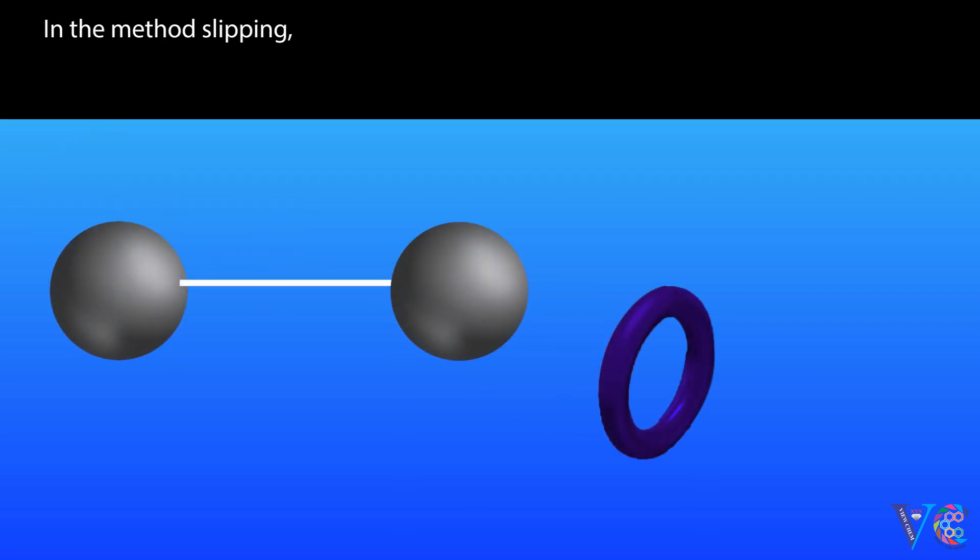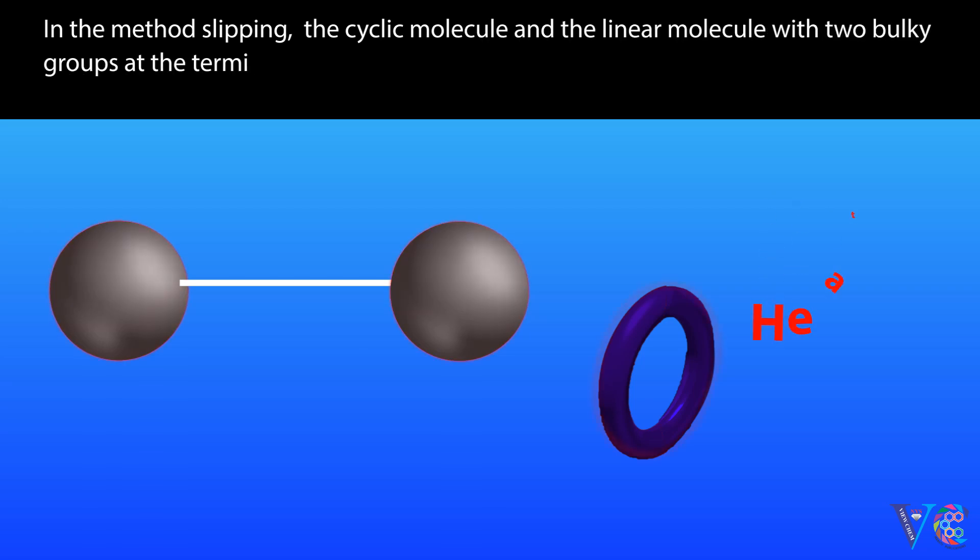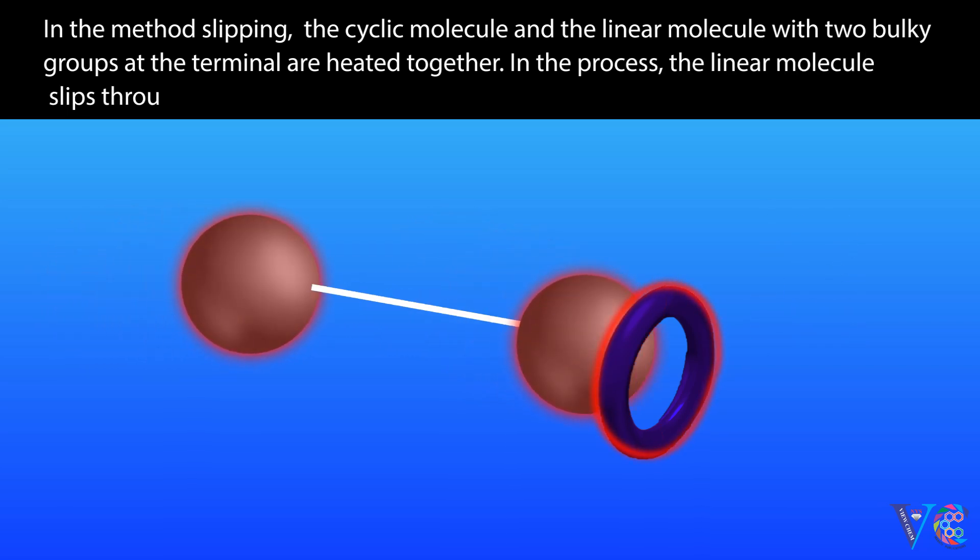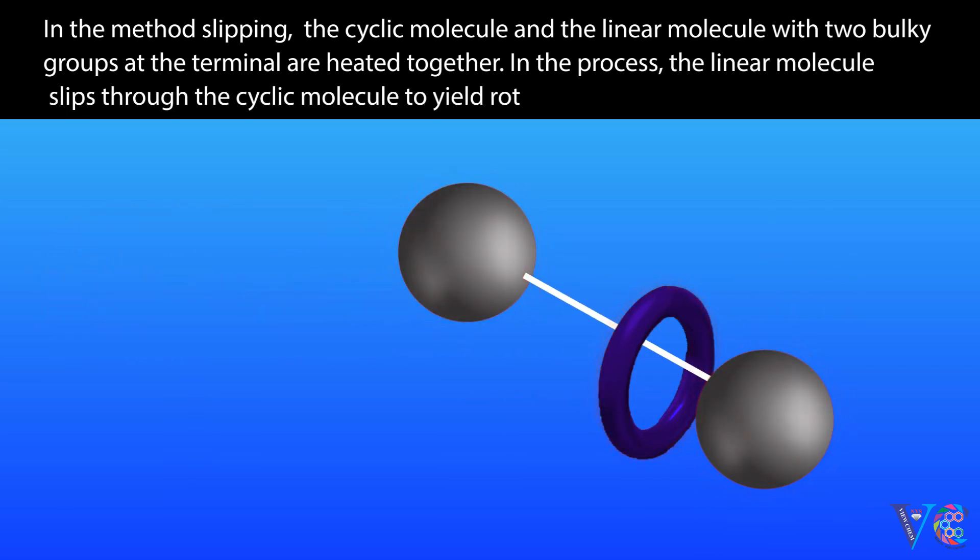In the method slipping, the cyclic molecule and the linear molecule with two bulky groups at the terminal are heated together. In the process, the linear molecule slips through the cyclic molecule to yield rotaxane.